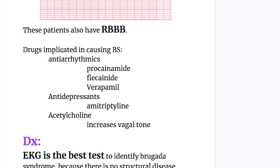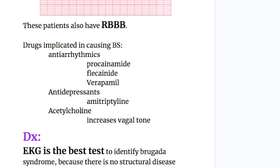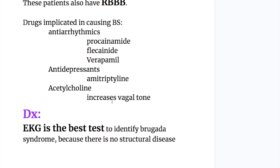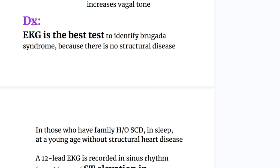Drugs implicated in causing Brugada syndrome include antiarrhythmic sodium channel blockers such as procainamide, flecainide, and verapamil. Antidepressants like amitriptyline and acetylcholine — because it increases vagal tone — may also precipitate Brugada syndrome.